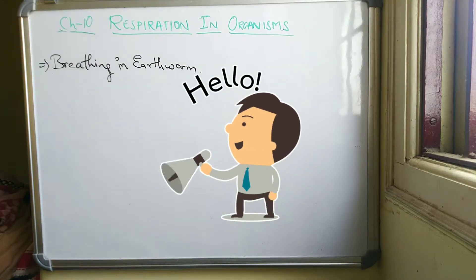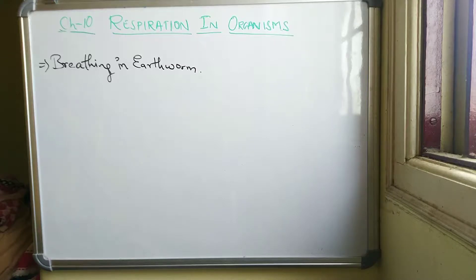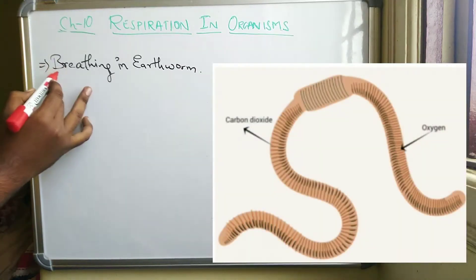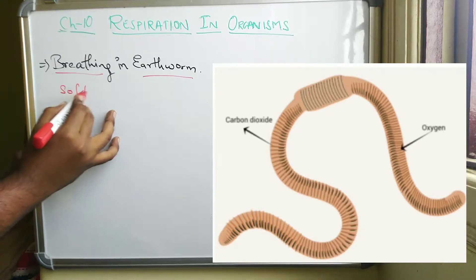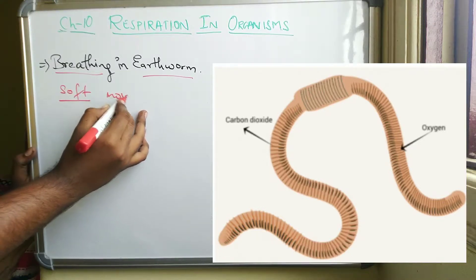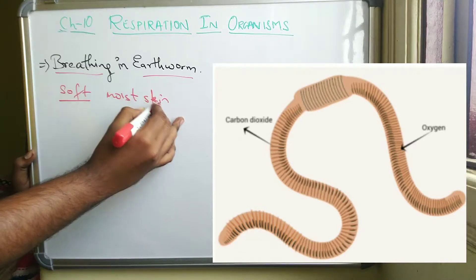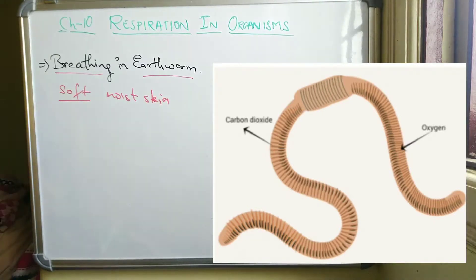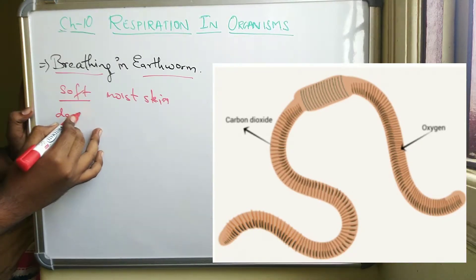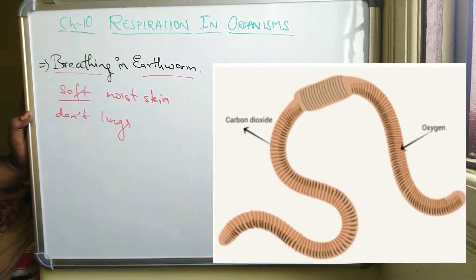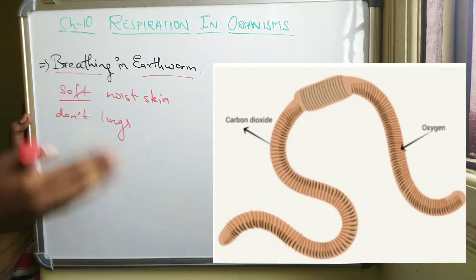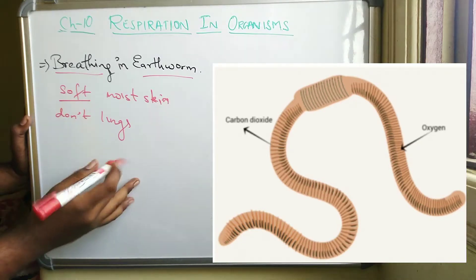Welcome back. In this video we will be discussing the breathing in earthworms. We need to understand the structure of the earthworm. Basically, earthworms have soft, moist skin. They don't have any lungs, so how do they survive? How does the exchange of oxygen and carbon dioxide happen? That is what we will be studying.